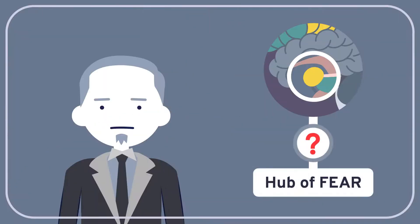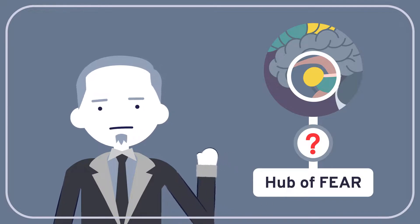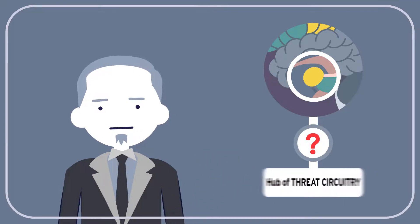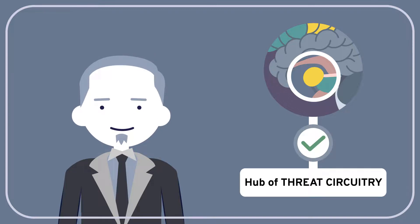So is the amygdala the hub of fear? Not according to Ledoux. For Ledoux, the amygdala is better seen as being the hub for the brain's threat circuitry.